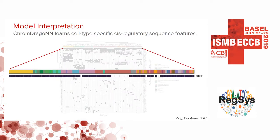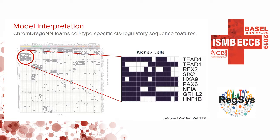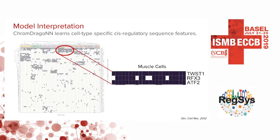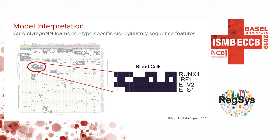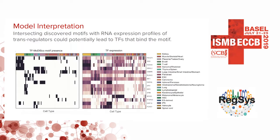For example, the model picks out CTCF as a marker of open chromatin in almost all cell types. We see cell-type-specific clusters — for kidneys, HNF6.2 and GRHL2 are known regulators; TWIST1 appears for muscle cells; and RUNX1, IRF1, and ETS1 appear for hematopoietic cells. We next intersect discovered motifs with RNA expression profiles of their transcription factors, finding that patterns of motif presence strongly correlate with gene expression patterns, potentially linking transcription factors to their binding motifs.